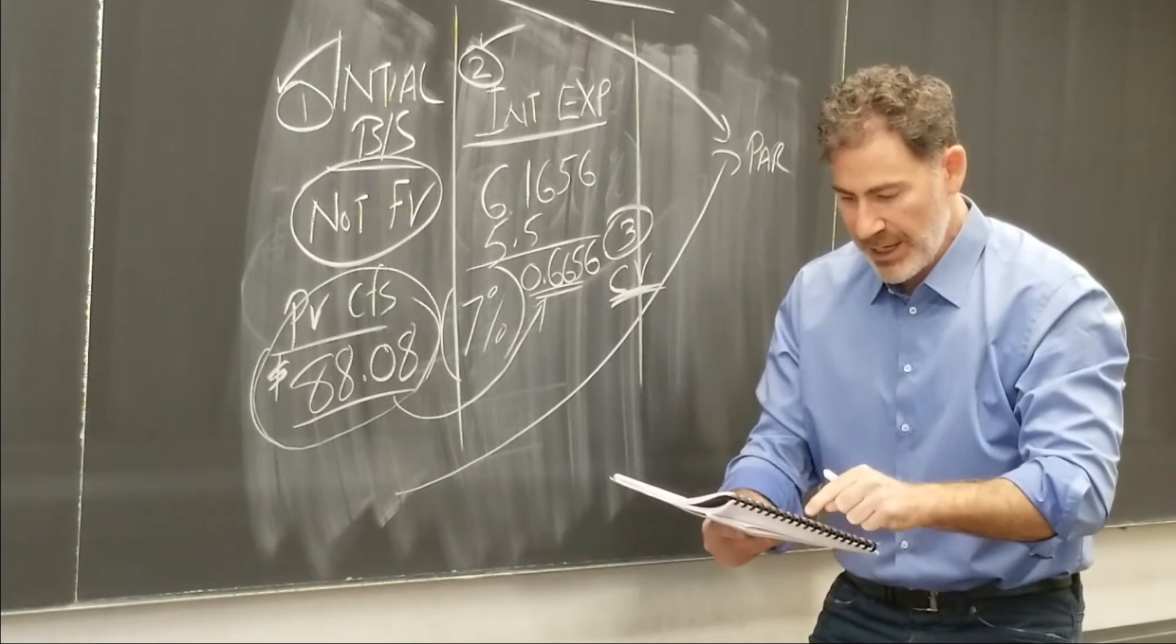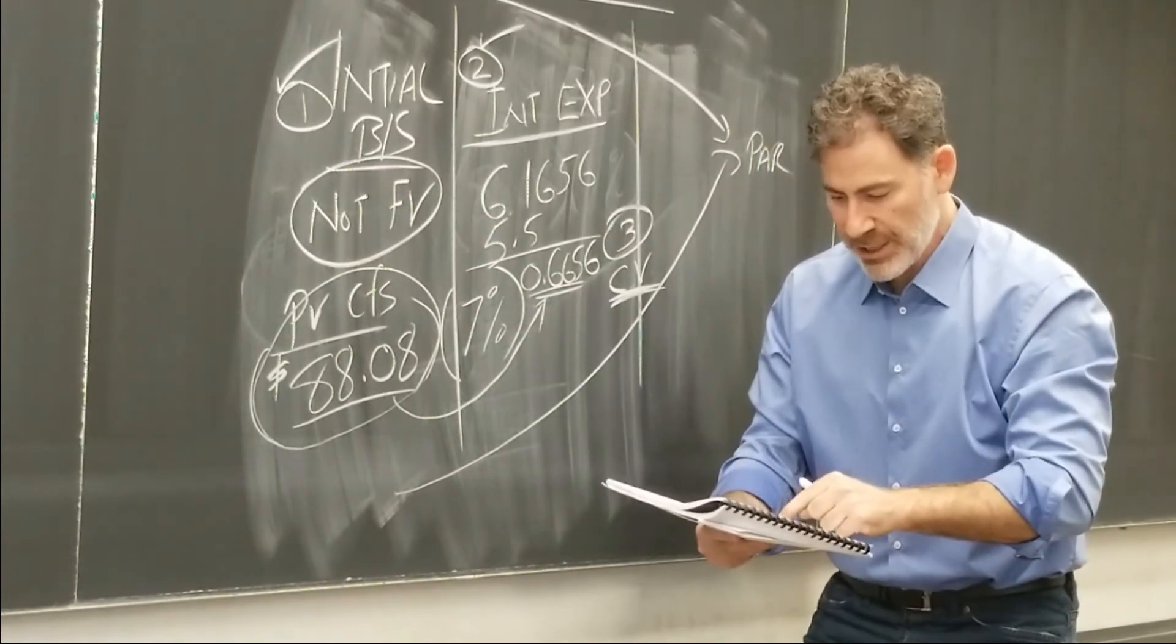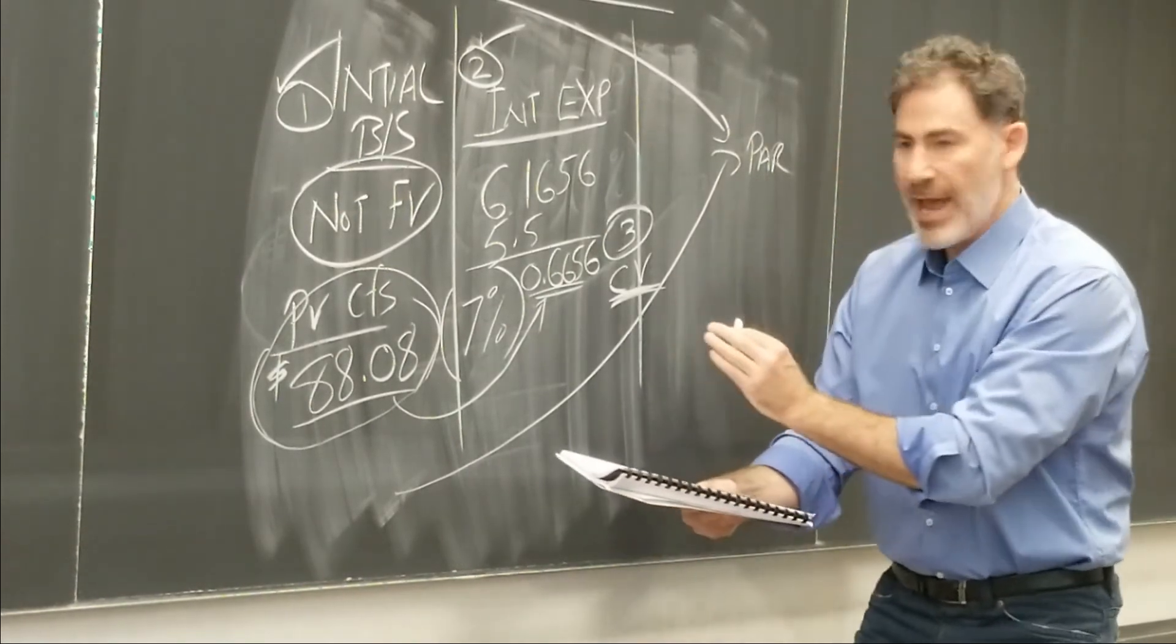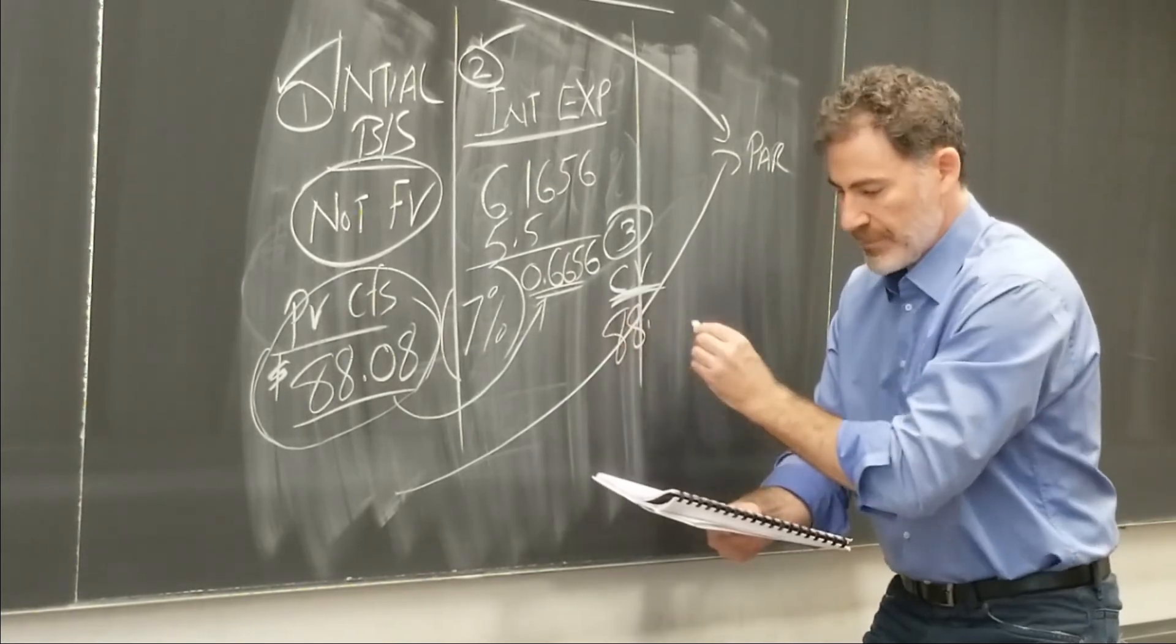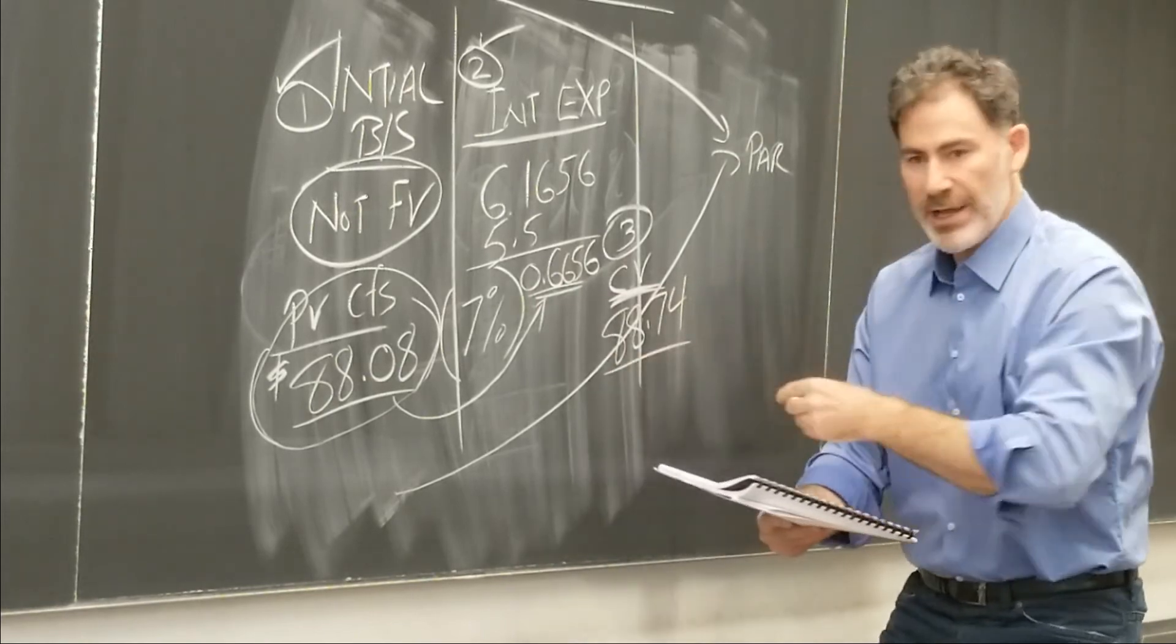So let's just do this. 88.08 plus the amortization. At the end of the year, this bond will be at 88.74. And there it is. It's amortizing its way up to par.